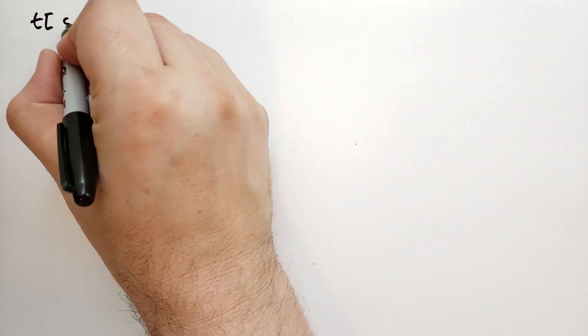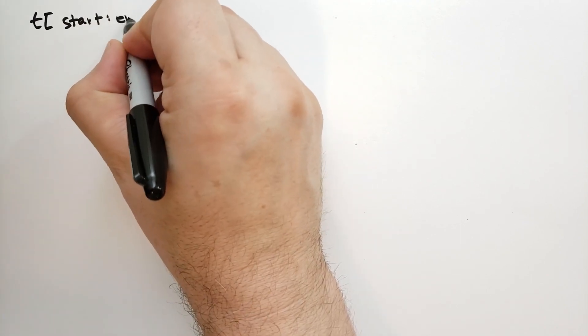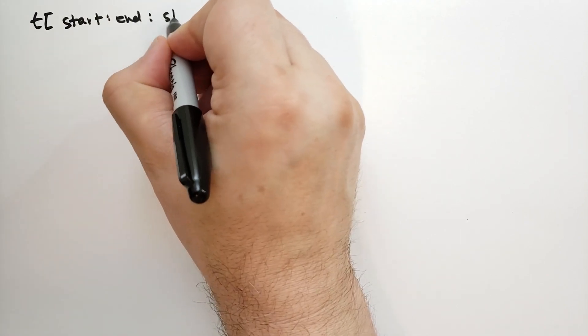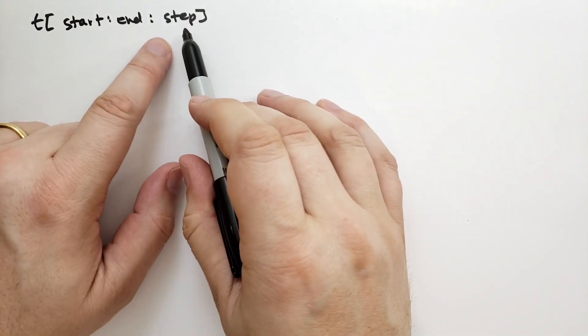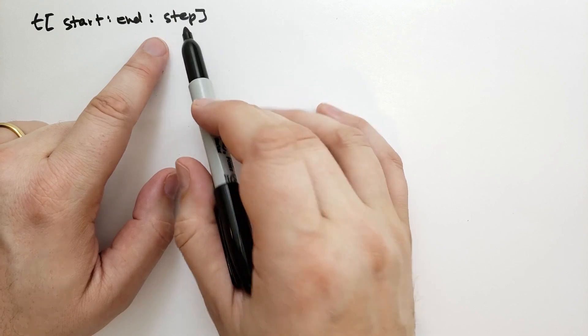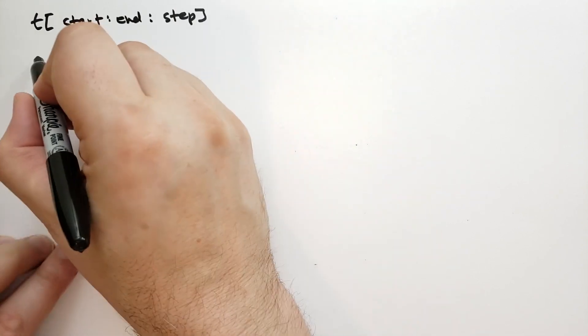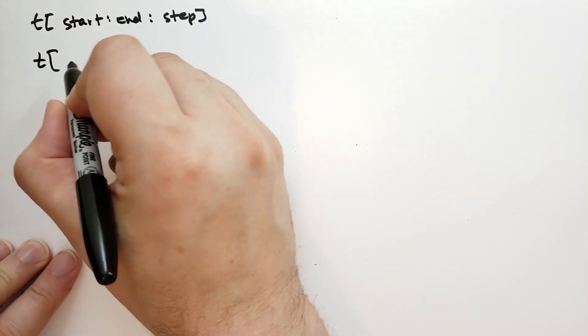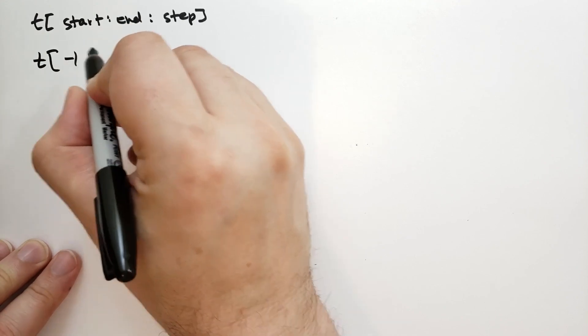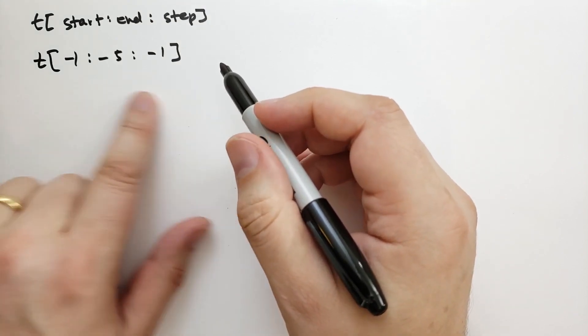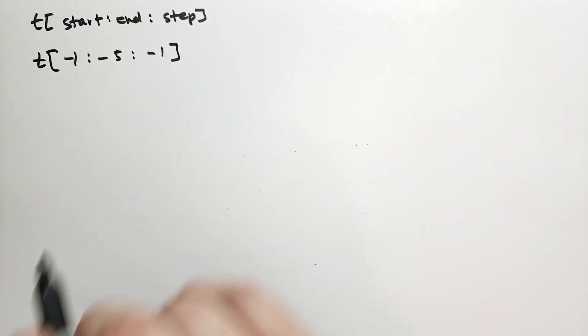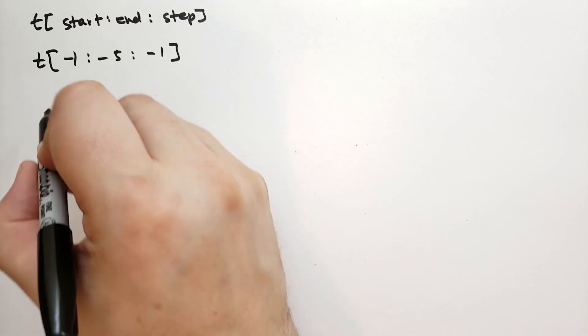You can also specify a step with slicing. So we can have t, which goes from start to end, and we can specify a step. And when we specify this third element, it says how many to increment by. Typically, the step is 1 if we don't specify it, which allows us to do things like we can say t, let's start from the last element, let's go to the fifth from the last element, and let's iterate by minus 1. So we're basically taking the tuple in reverse.